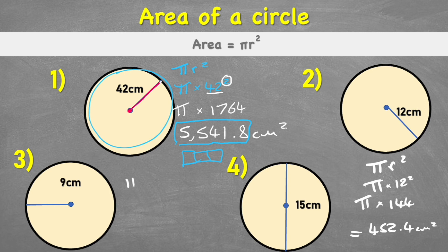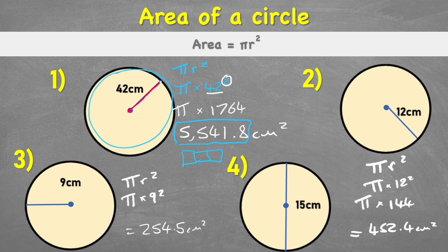Question three has a radius of nine centimeters. Starting with πr²: pi times nine squared. This time on the calculator I'll type pi times nine and press the squared button before pressing equals. That gives an answer of 254.5 centimeters squared.